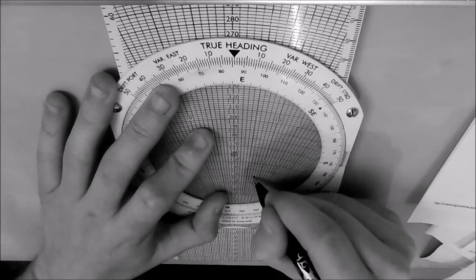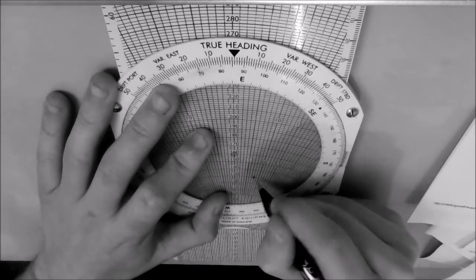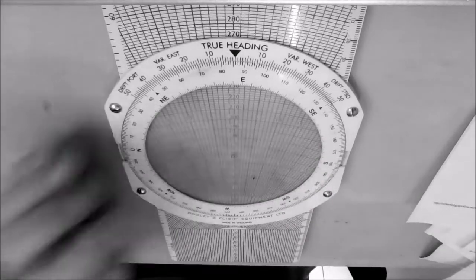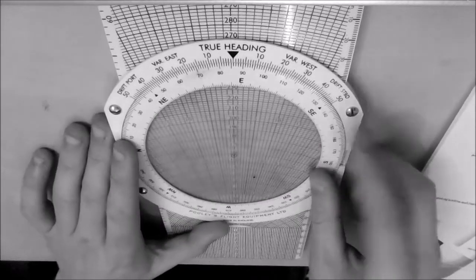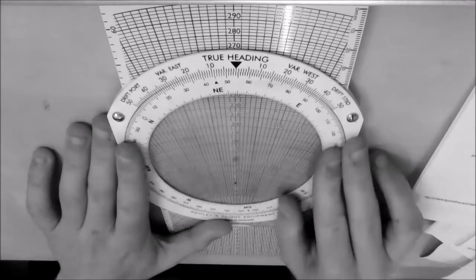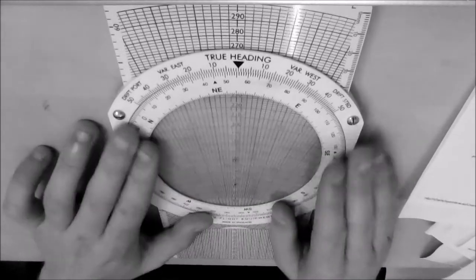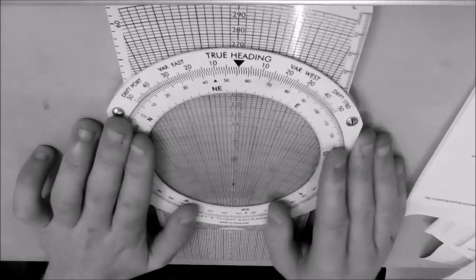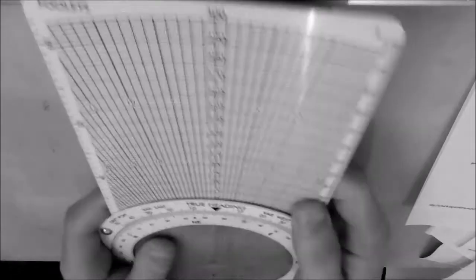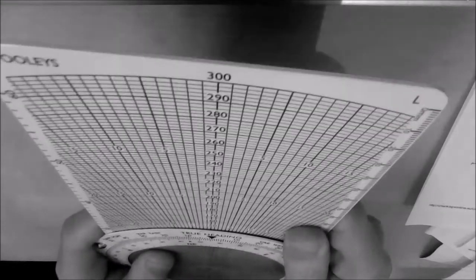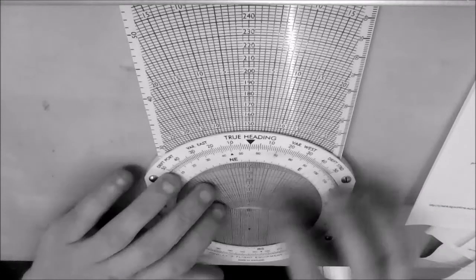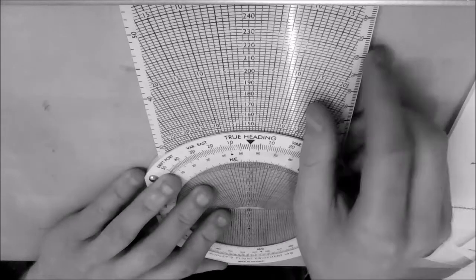Okay. Then all you have to do is rotate your CRP5 until that dot sits over your centre line. Take the slider all the way down to the bottom, which is where we measure our wind. So it sits on that line there.